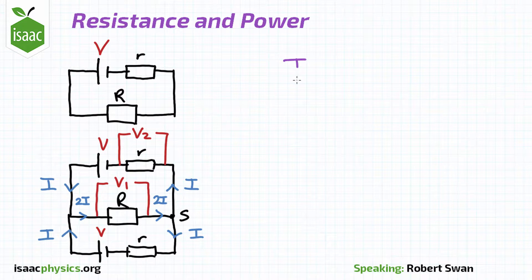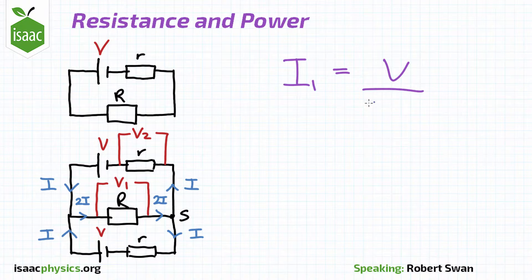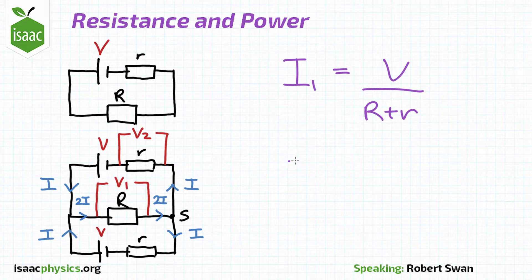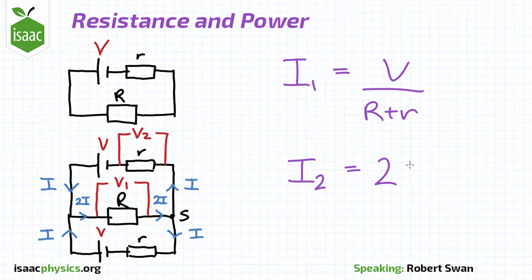I1 is simply the potential difference divided by the resistance of the circuit. Since the resistors are in series, their effective resistance is uppercase R plus lowercase r. From an intermediate result of the first part of the question, we have an expression for i, and we know that i2 equals 2i.